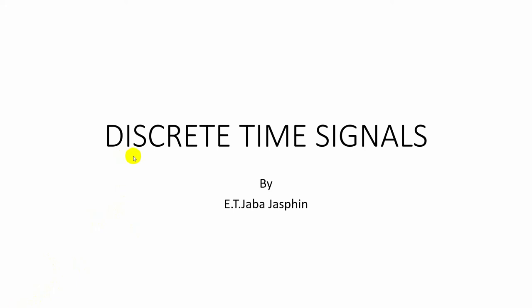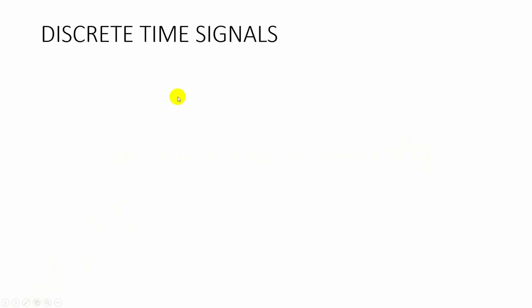In this video, we are going to discuss about discrete time signals and classification of discrete time signals. We know that a signal is a physical quantity that varies with time, space, or any other independent variable.